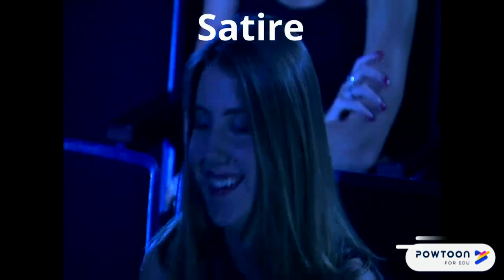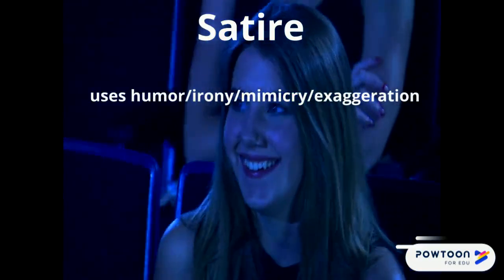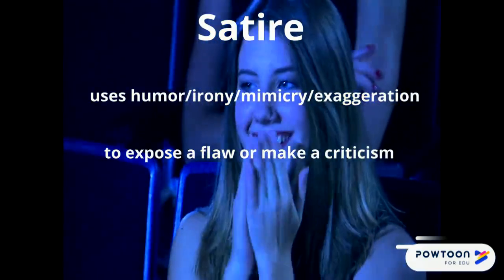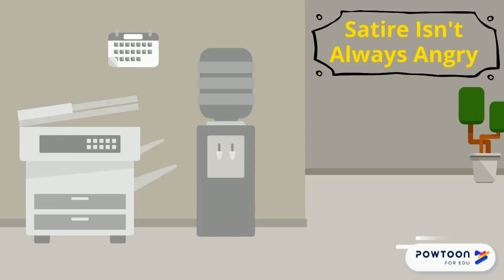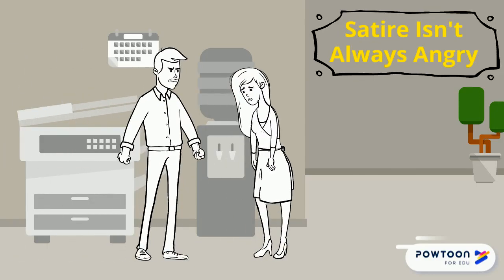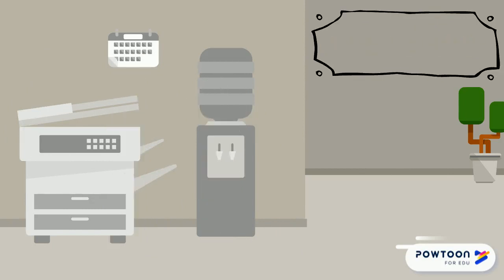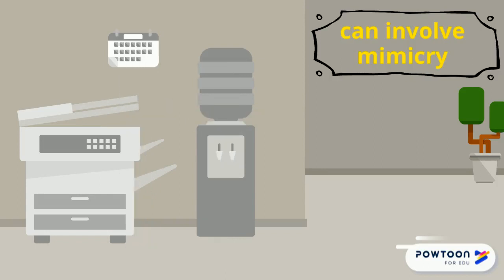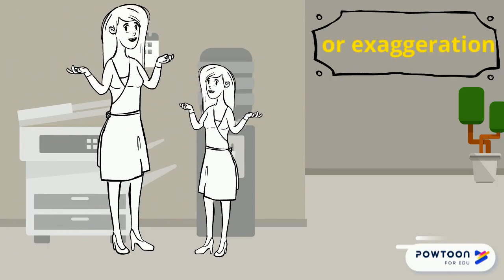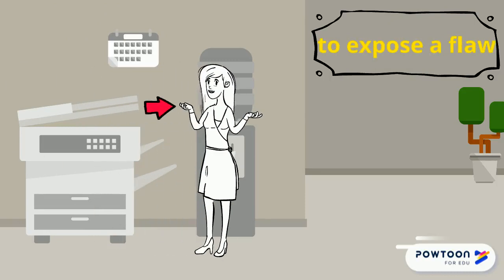Satire is similar to irony in that satire often uses irony. Satire tries to point out a flaw in something. Satire doesn't always need to be obvious — it can be subtle. But it usually involves mimicry or exaggeration, and it usually tries to show the flaws in something.